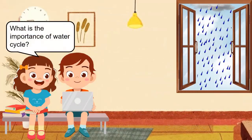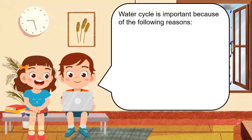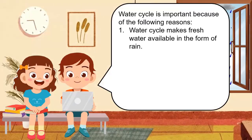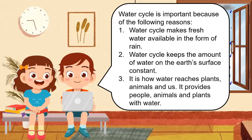What is the importance of the water cycle? Water cycle is important because: it makes fresh water available in the form of rain; it keeps the amount of water on the earth's surface constant; it is how water reaches plants, animals, and us; and it provides people, animals, and plants with water.